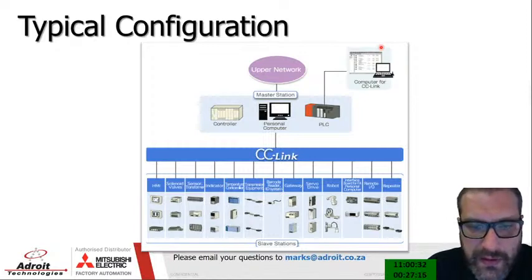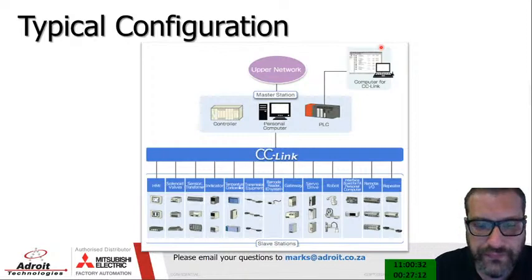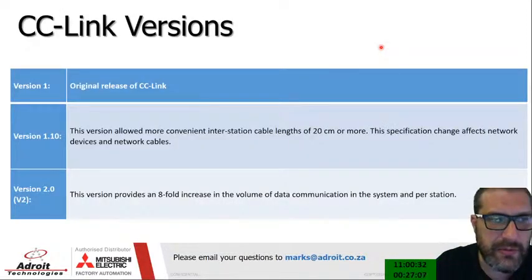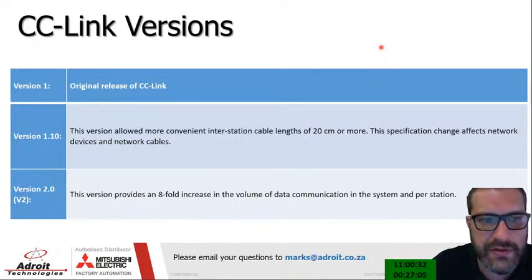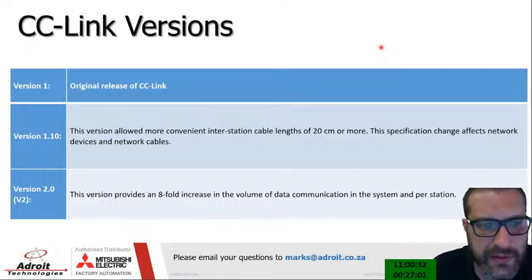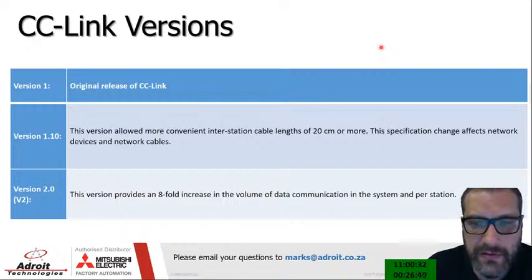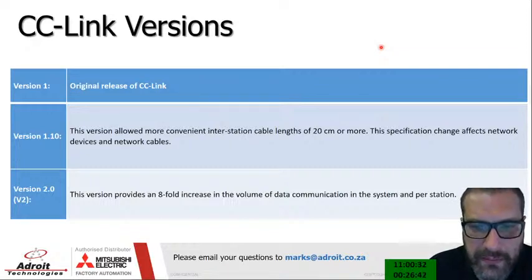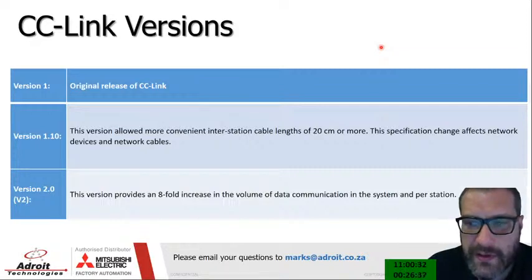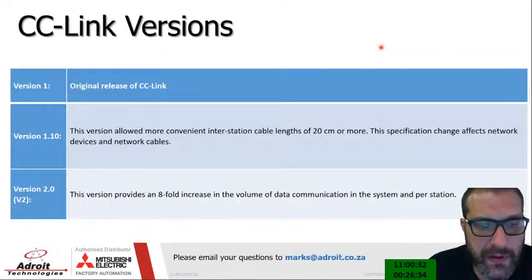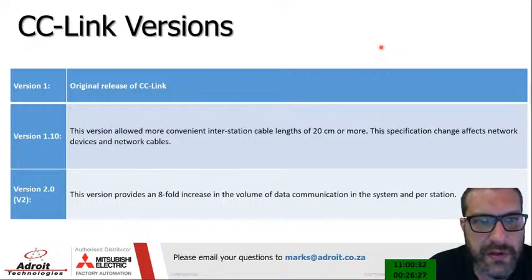There are three versions of CC Link. Version 1 is the original release. Version 1.1 allows more convenient inter-station cable lengths of 20 centimeters or more — so if two stations are next to each other, you need a minimum cable length of 20 centimeters. This specification change affects network devices and cables. Version 2 provides an eightfold increase in the volume of data communications per station, allowing communication with significantly more stations and IO in the field.